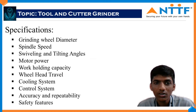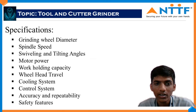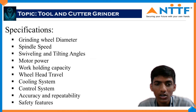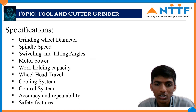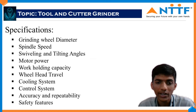Specifications of a tool and cutter grinder include: grinding wheel diameter, number of spindle speeds, swiveling and tilting angles, motor power, work holding capacity, wheel head travel, cooling system, control system — whether CNC or conventional — accuracy and repeatability, and safety features.